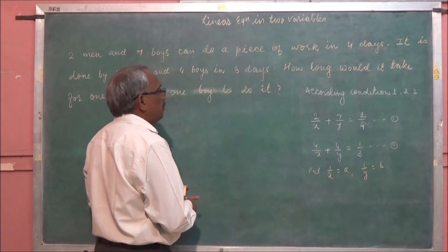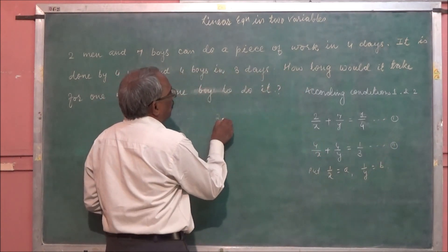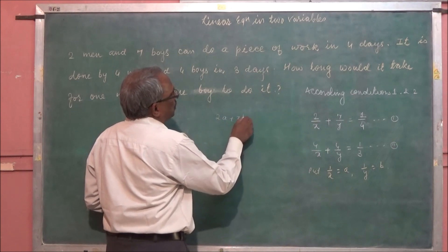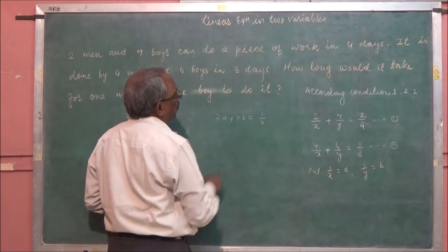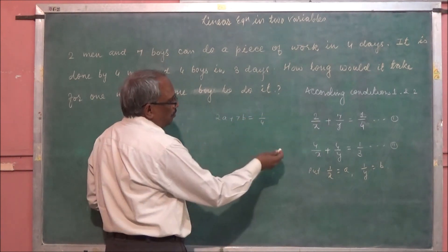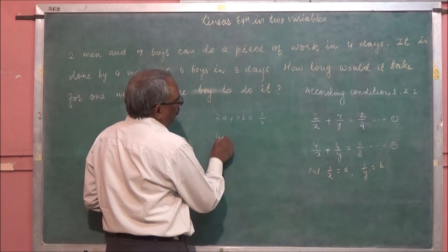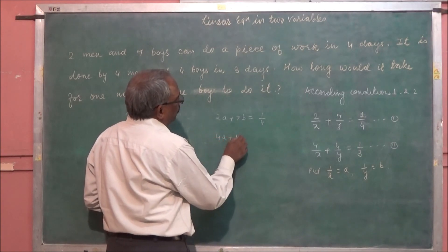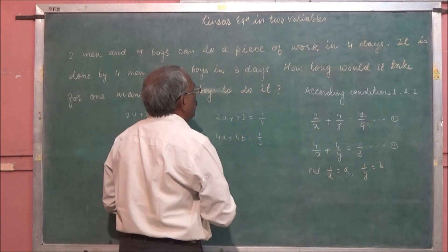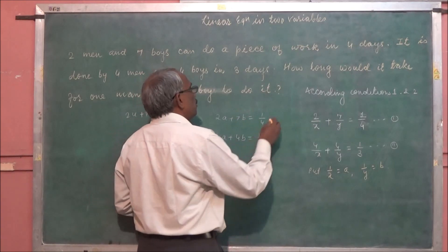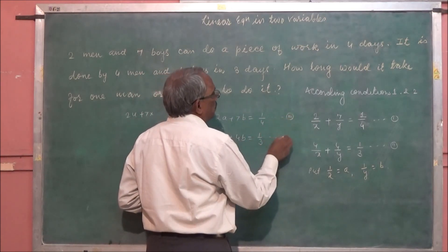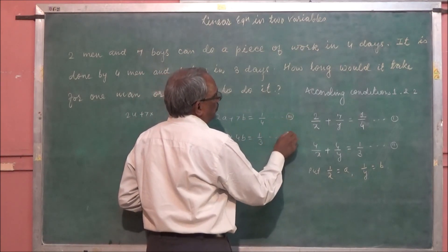After substitution, equation 1 becomes: 2a + 7b = 1/4 (call this equation 3). And equation 2 becomes: 4a + 4b = 1/3 (call this equation 4).